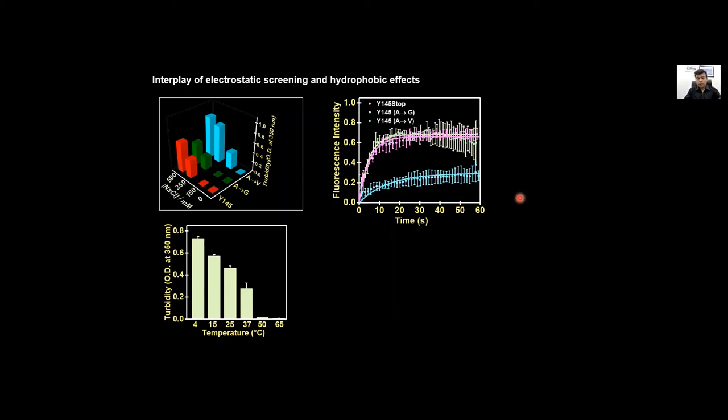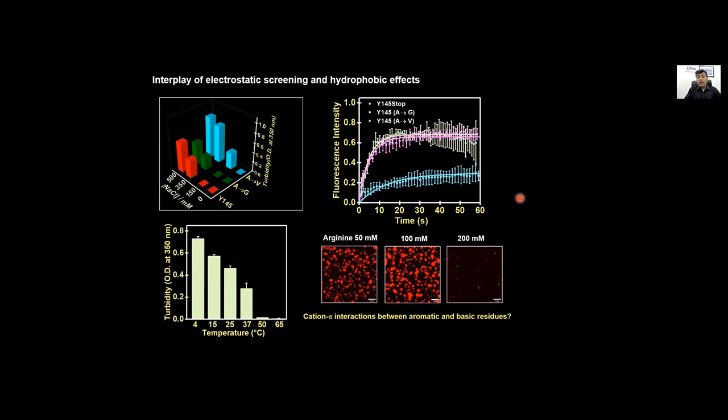We believe that in addition to hydrophobic effect there are other enthalpically driven interactions like electrostatic screening, hydrogen bonding and maybe cation-pi because there are many lysines and a few arginines that can interact with tyrosines and tryptophans. There are a large number of tryptophans. Therefore we put in arginine and if we increase the concentration of arginine we see phase separation propensity gets lower because arginine now can interact with the aromatics and therefore it prevents intermolecular interactions.